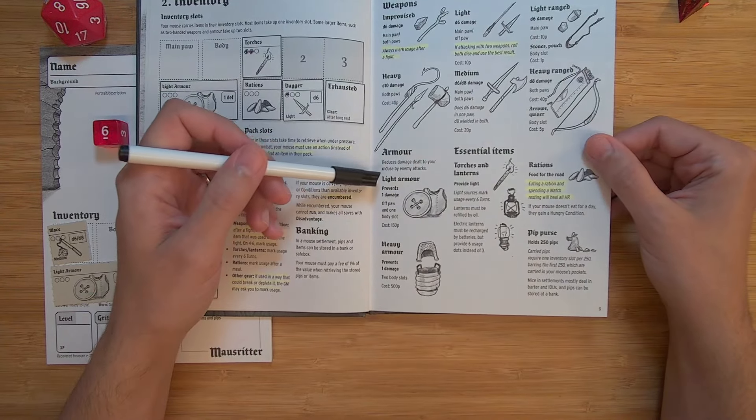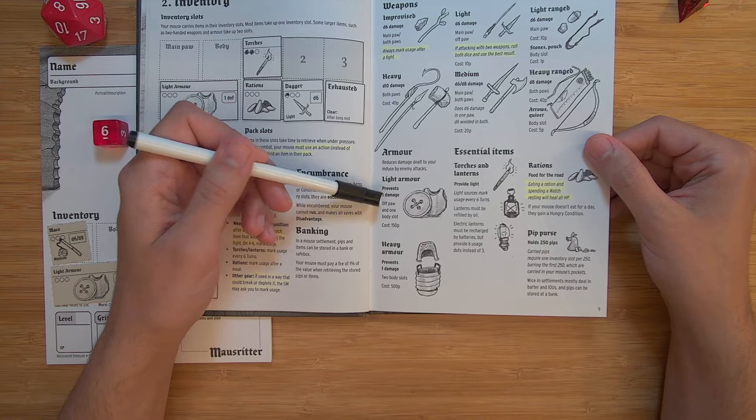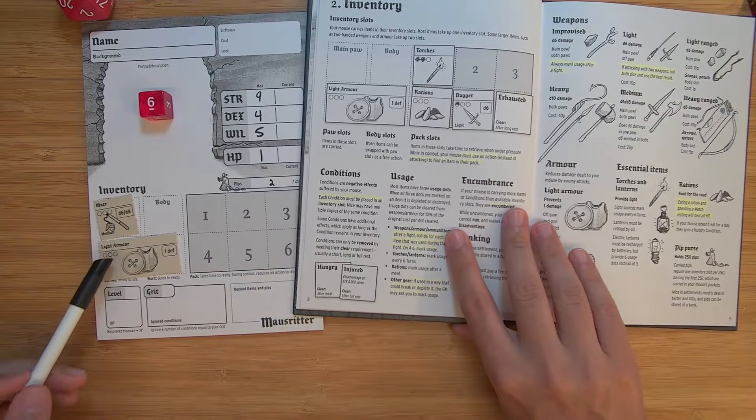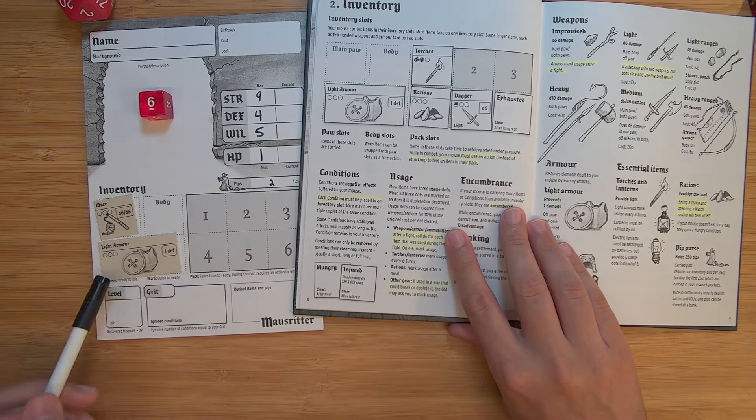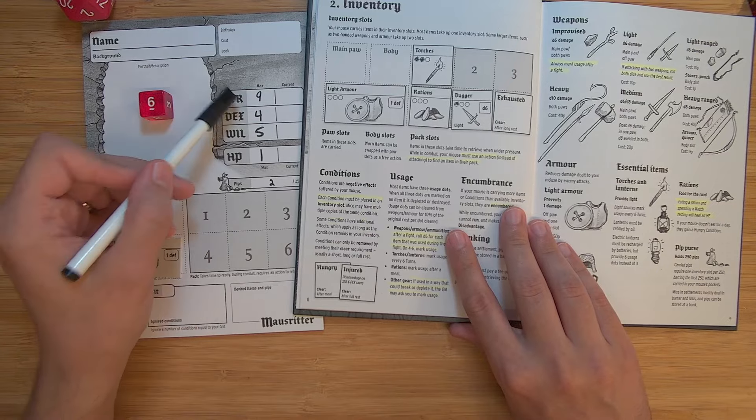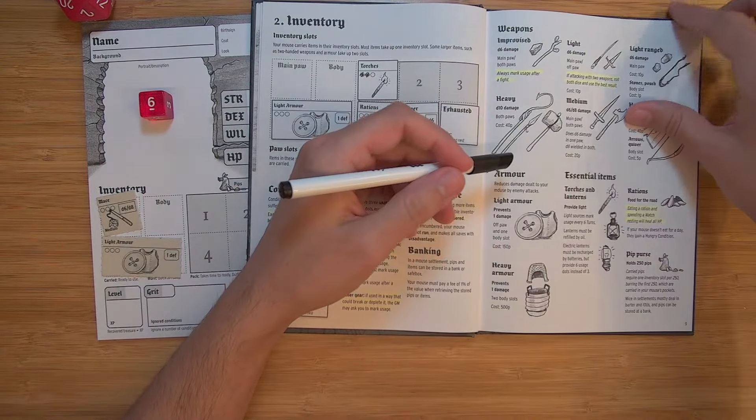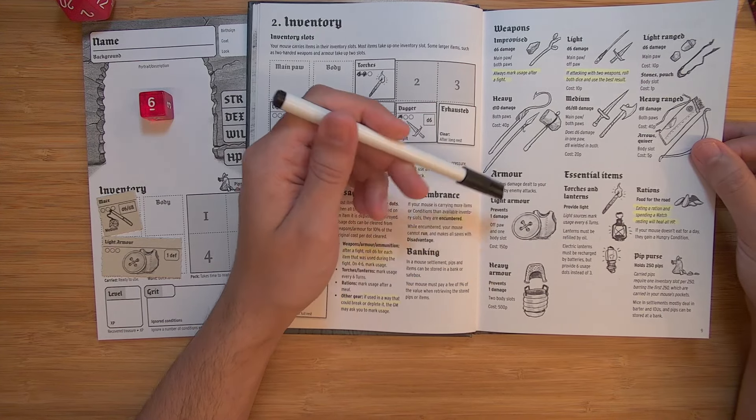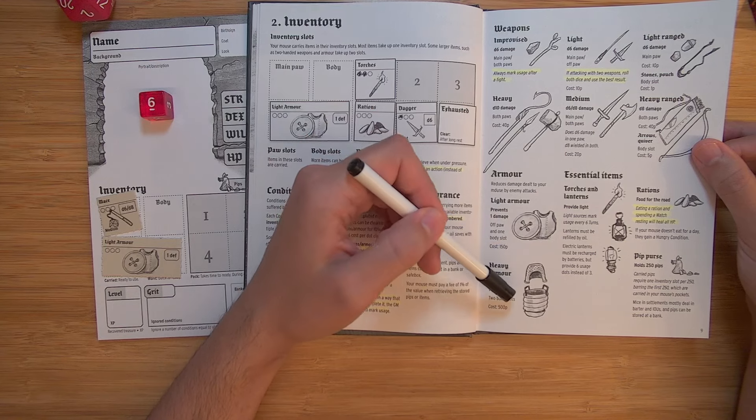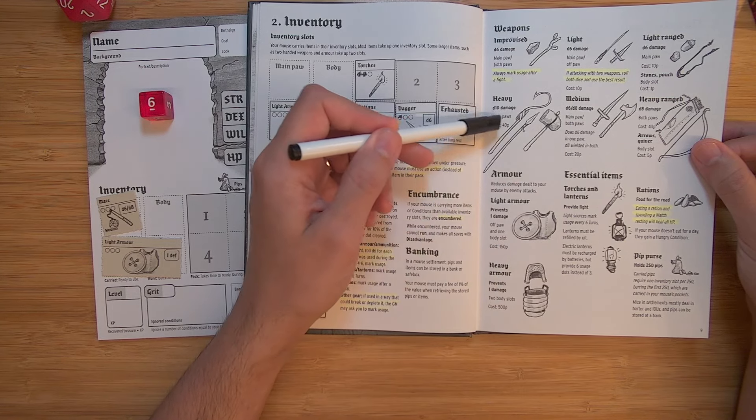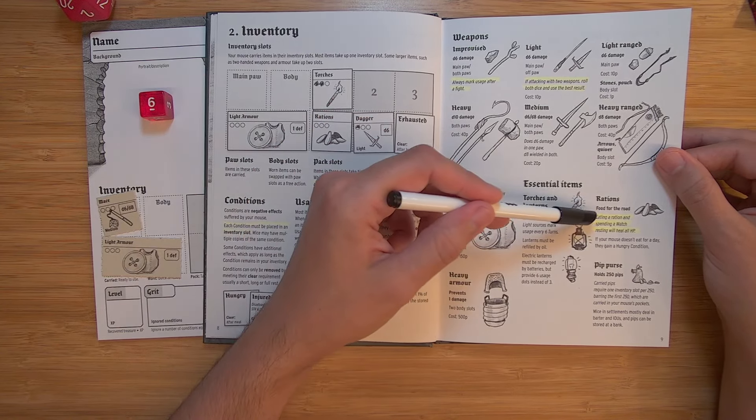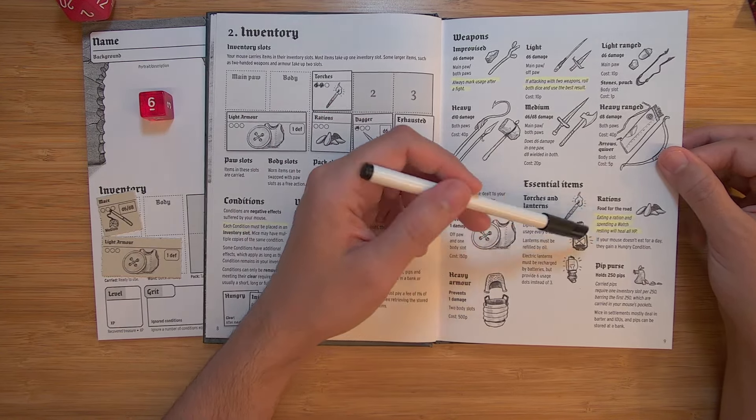Armor. So damage is pretty straightforward. Armor prevents one damage. So if you take two damage and you're wearing, so our little mouse, he's probably very thankful for his armor. So if he were to take two damage instead of dying, well, I'll get to that in a second. So instead of taking two damage, he would just take one damage, and then I believe you take damage to some of your stats is how that works. So heavy armor prevents one damage. It takes two body slots. They both prevent one damage, but this takes your offhand and your body slot. But with heavy armor, you can wield something with both paws to deal more damage. Sort of a different way to get to the same thing. Torches and lanterns, rations, eating a ration, and spending a watch, resting will heal all of your hit points. Or hit protection, rather. And you have a pit purse as well.